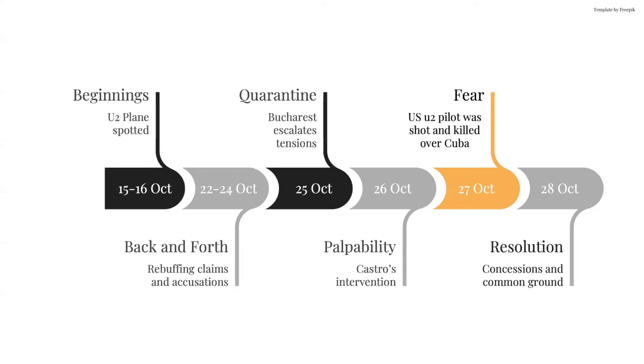Yet, the entirety of the conflict ended in resolution, with the United States agreeing to withdraw the Jupiter missiles from Turkey in exchange for the Soviet withdrawal of missiles from Cuba, as well as the establishment of a direct phone line between the two countries.